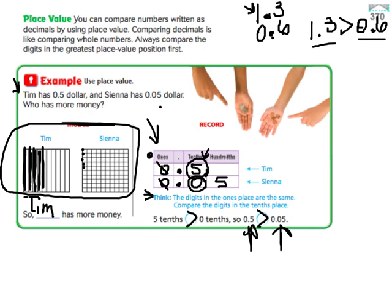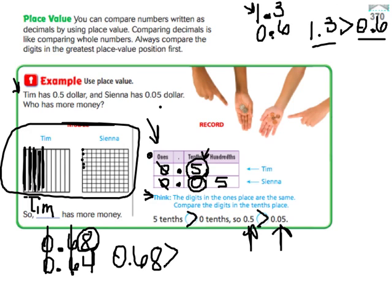Let's try another one really quick, lining it up this place value way. Let's say sixty-eight hundredths and sixty-four hundredths. They both have zero in the ones place, so we move over to the tens. They both have six in the tens place, so we move over to the hundredths. This one is bigger, so I'm going to say sixty-eight hundredths is greater than sixty-four hundredths.